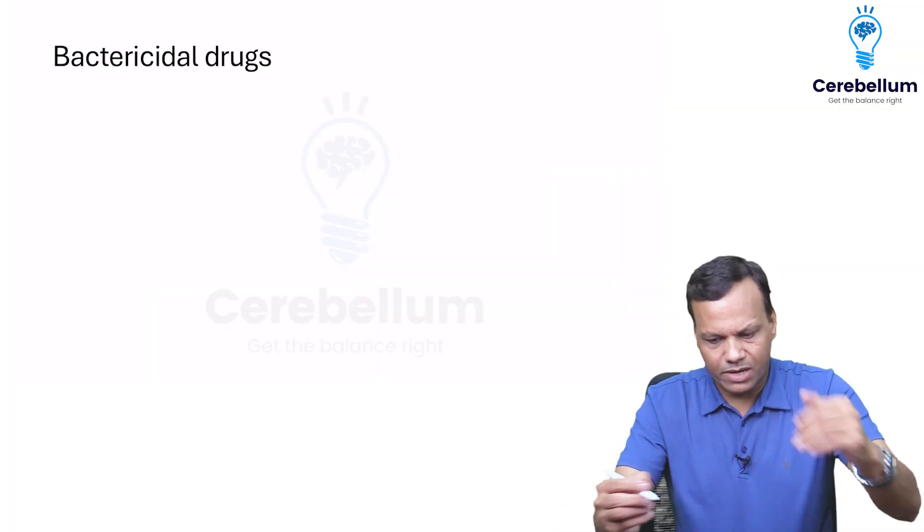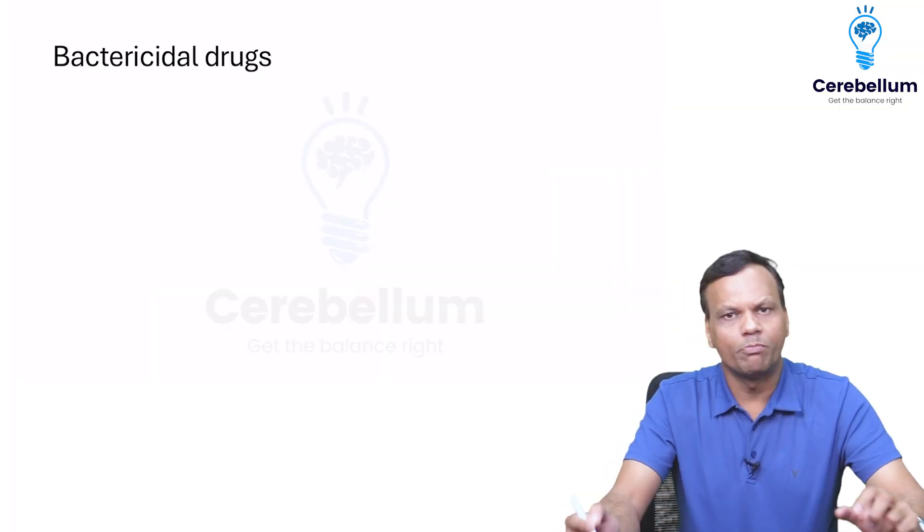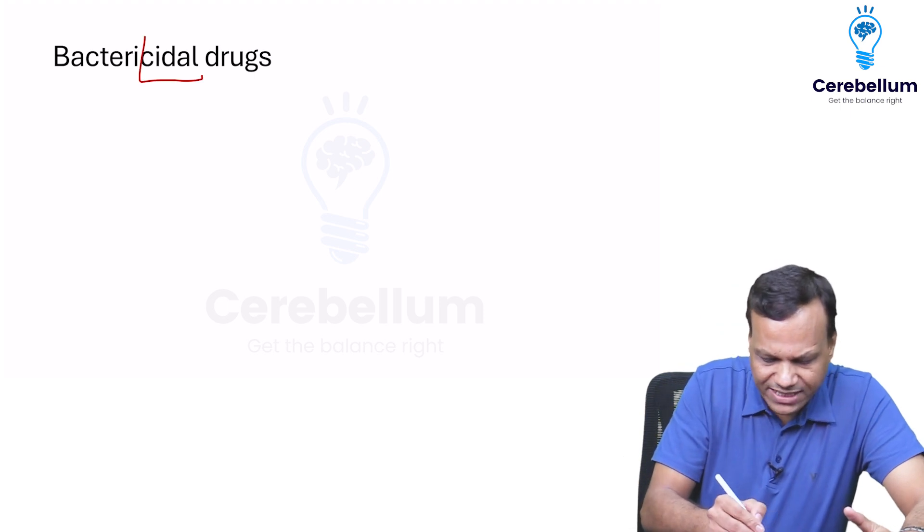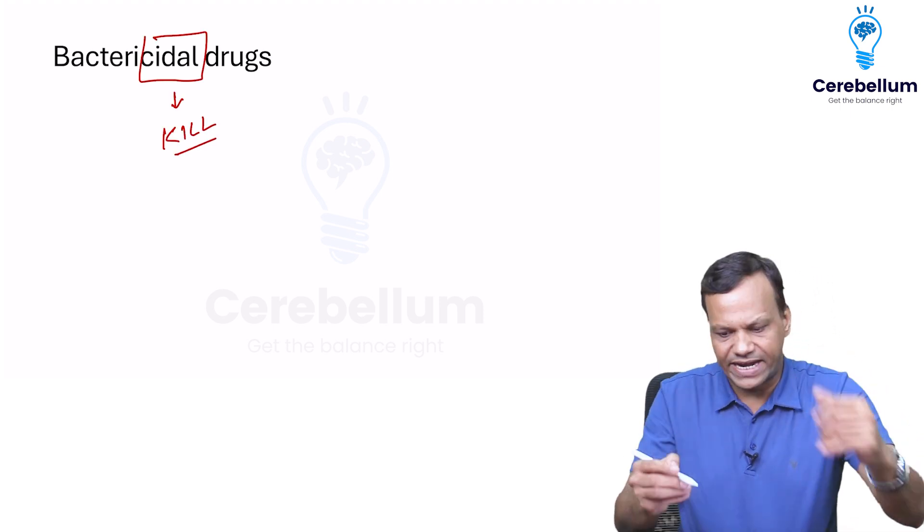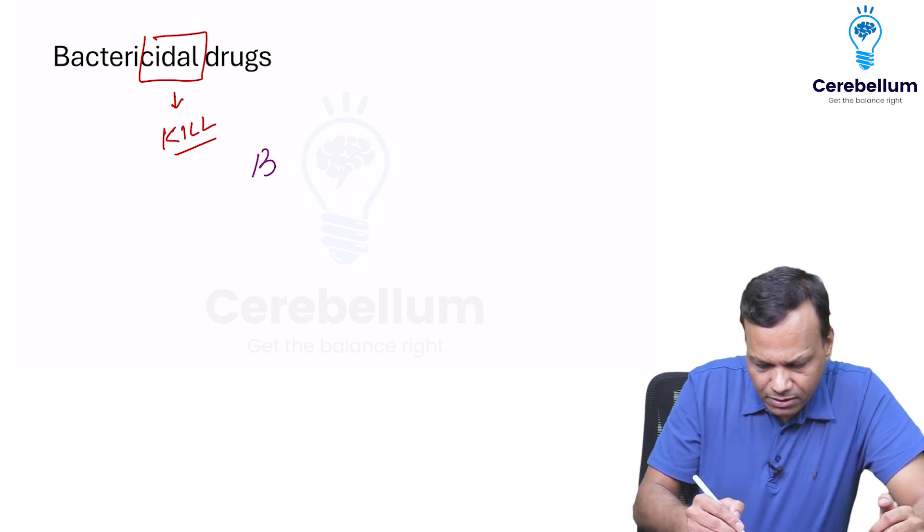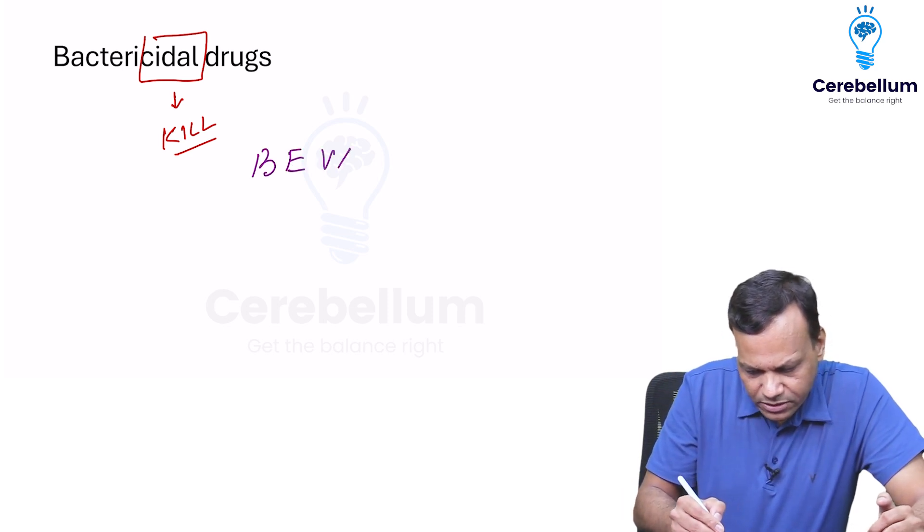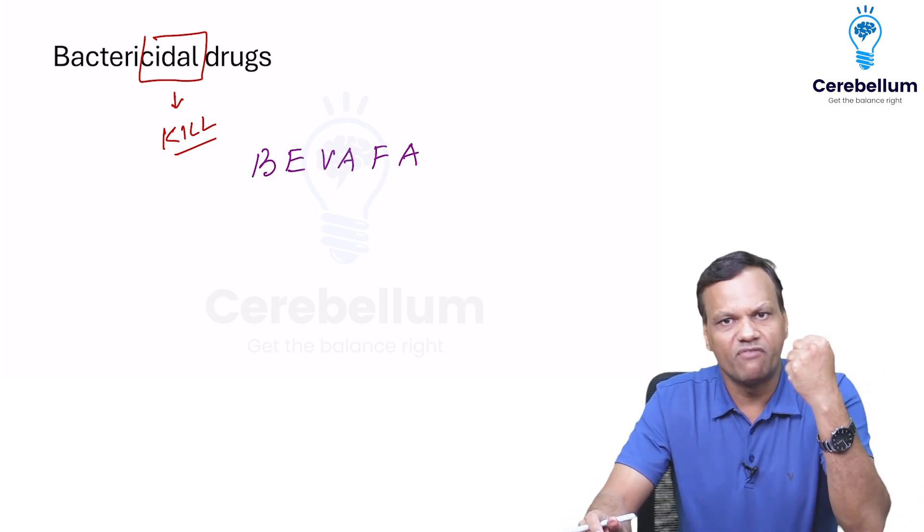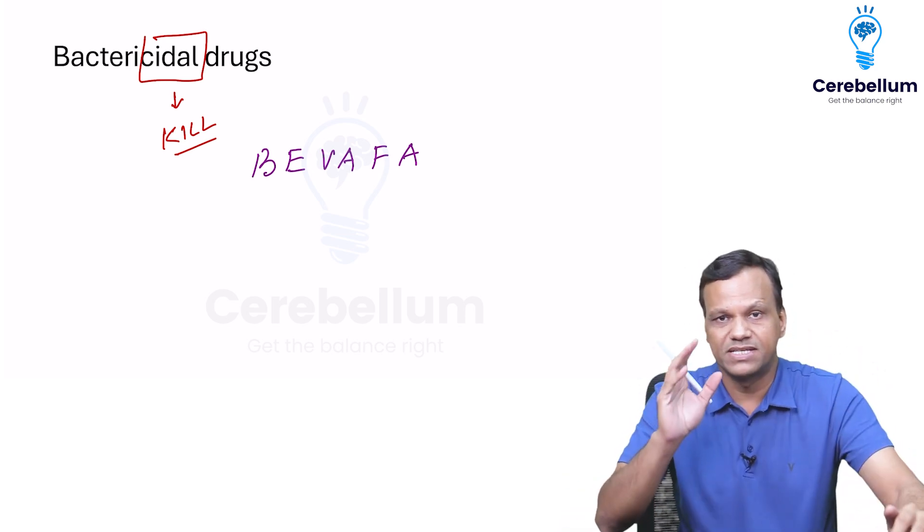Hello everyone, today's mnemonic is to remember bactericidal drugs, important cidal drugs. Cidal are the drugs which kill the bacteria. So how to remember which are cidal, which are static? You can remember BEBUFFA. If she's bebuffa, she'll kill you, right? So bebuffa kills, which means bebuffa drugs are killers, that means they are cidal drugs.